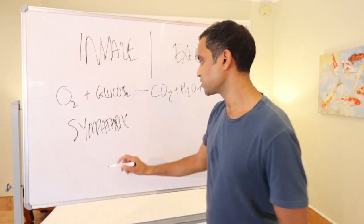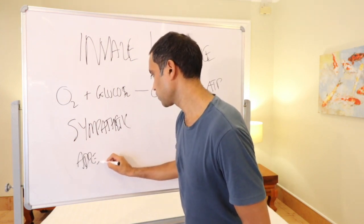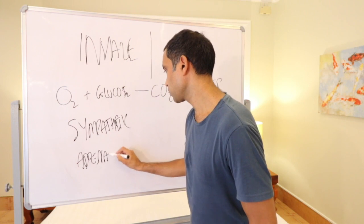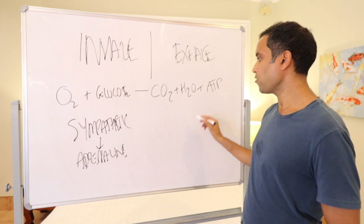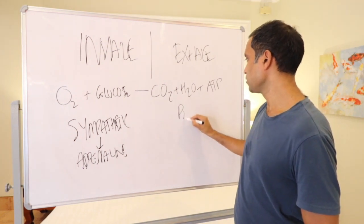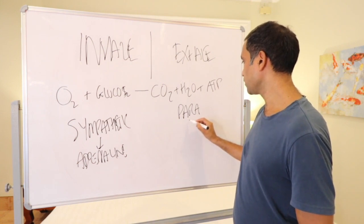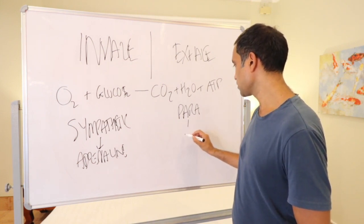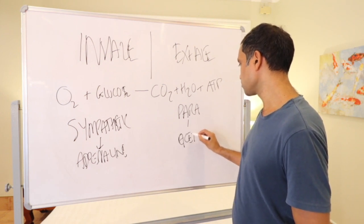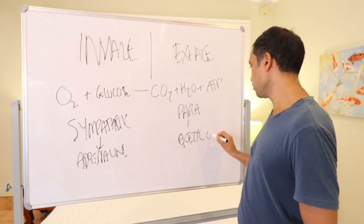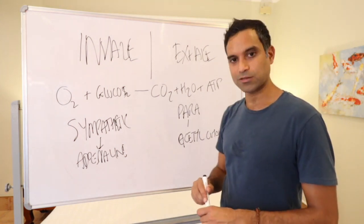The sympathetic nervous system produces adrenaline, and the parasympathetic nervous system is stimulated on the exhale, and that produces acetylcholine. And that's the neurotransmitter responsible for the parasympathetic nervous system working.